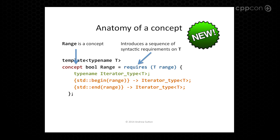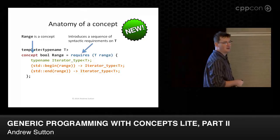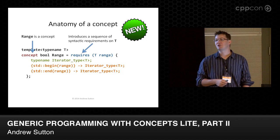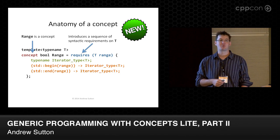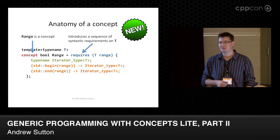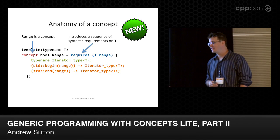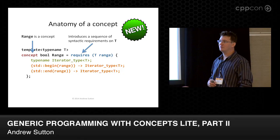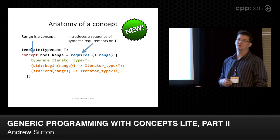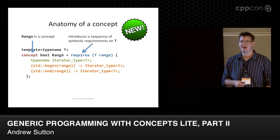A requires expression is a new primary expression in C++ grammar. Basically, this introduces a set of requirements. The parameters given — like T, range — are simply provided for notation to help us write these constraints. They are not actual objects; they have no lifetime and no linkage. It is purely for conveying intent. This effectively gets rid of std::declval — the only purpose for that was to get objects to use in expressions without constructing them.